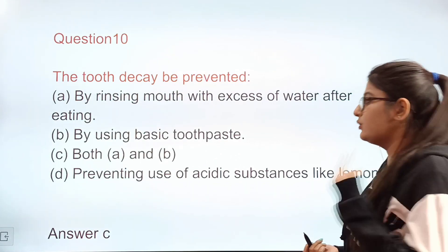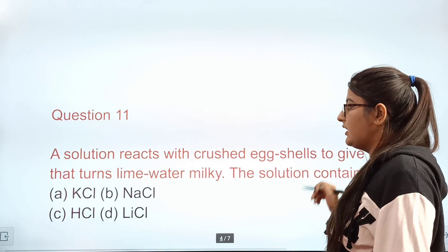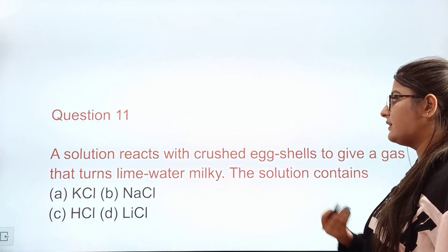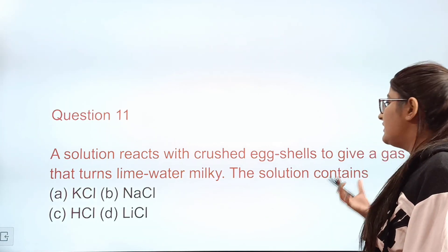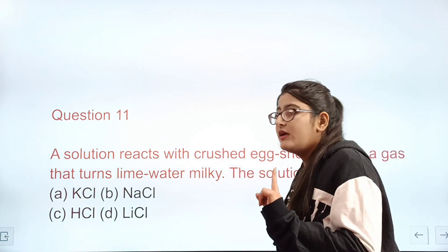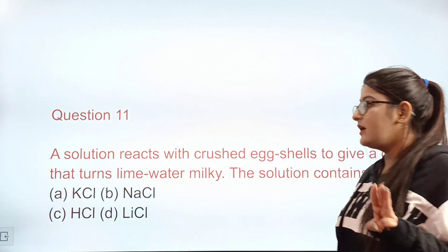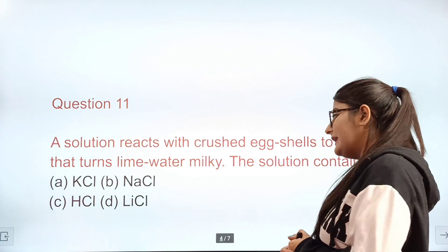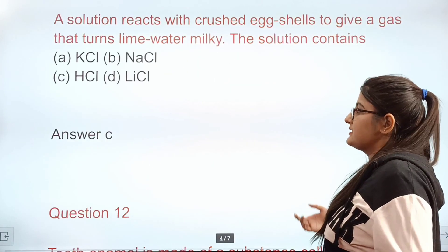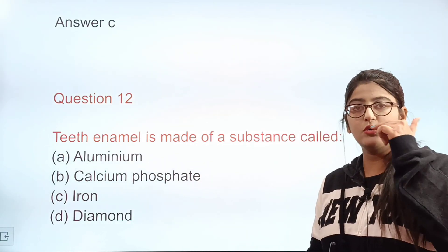Question 11: A solution reacts with crushed egg shells to give a gas that turns lime water milky. The solution contains — Option A: potassium chloride. Option B: sodium chloride. Option C: hydrochloric acid. Option D: lithium chloride. Correct answer: C — hydrochloric acid.